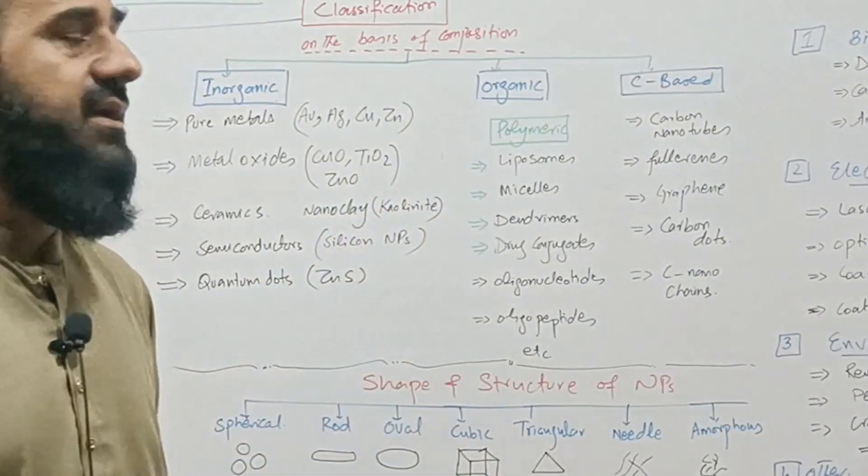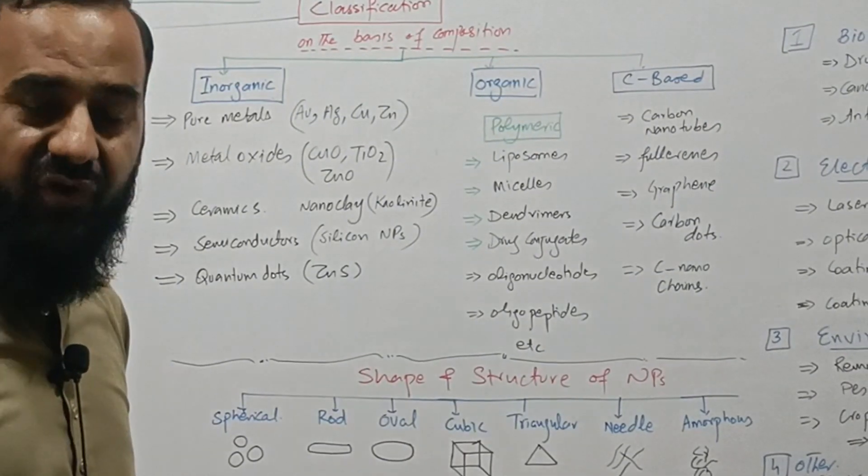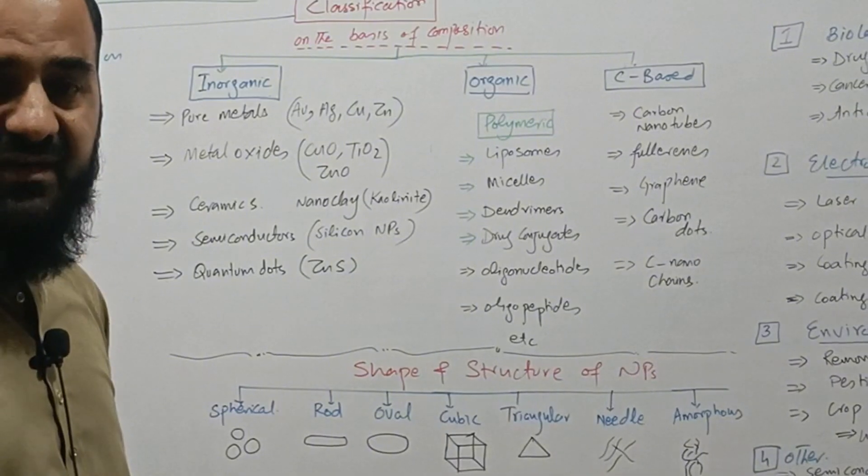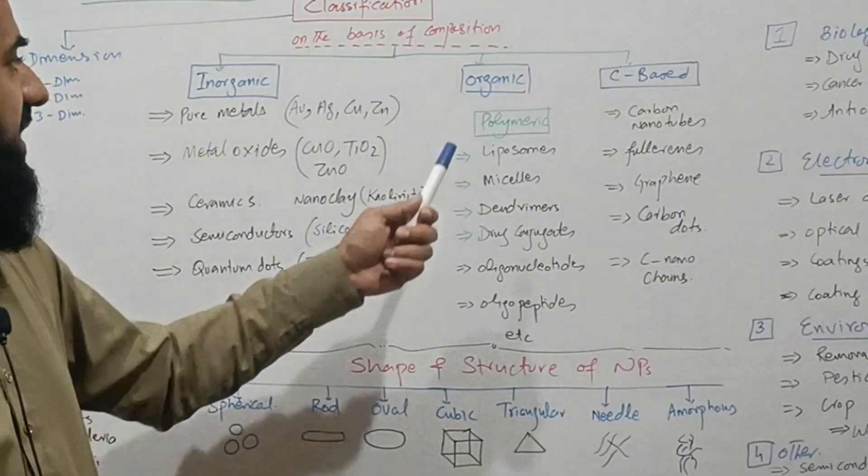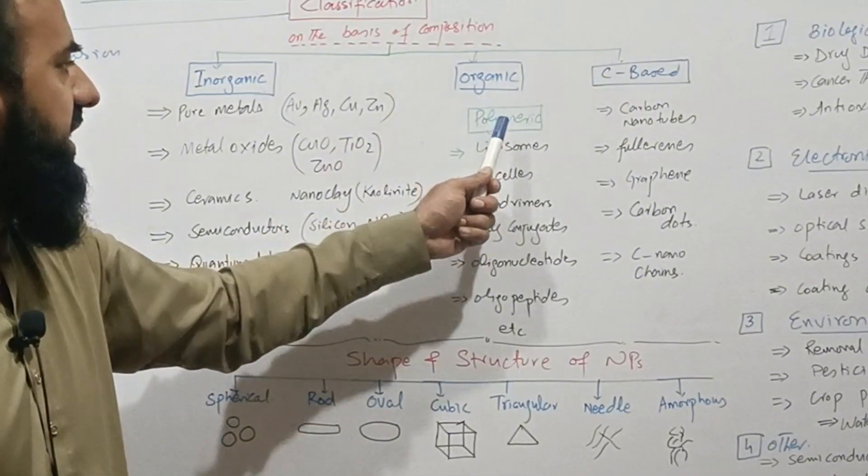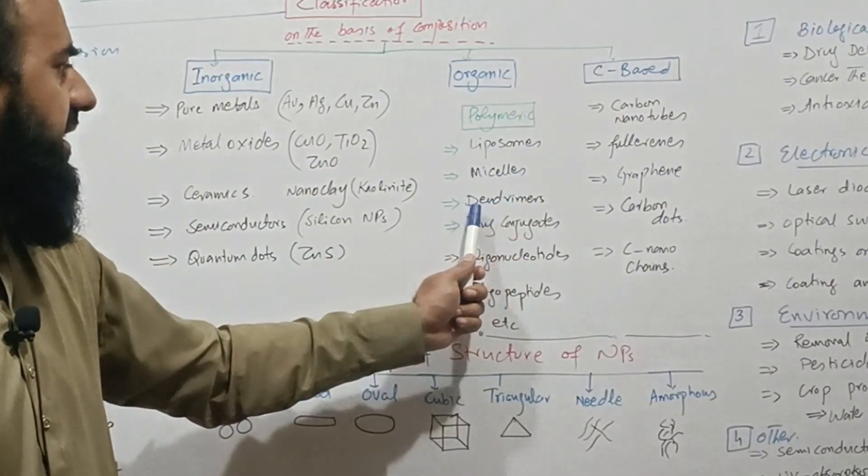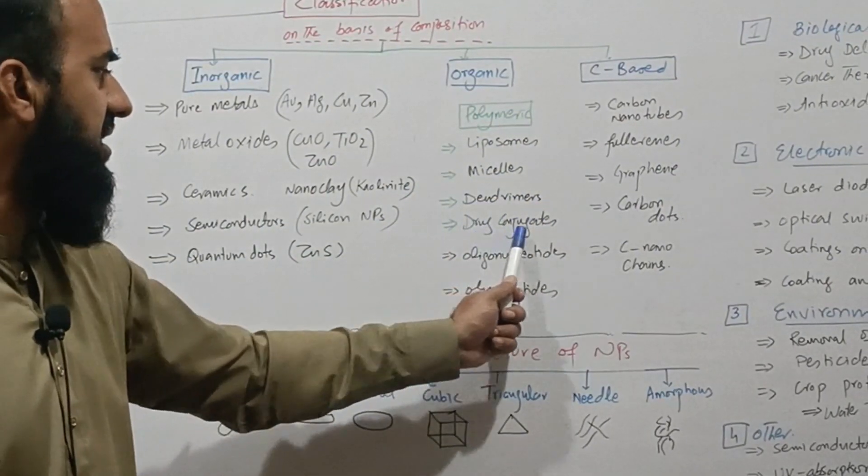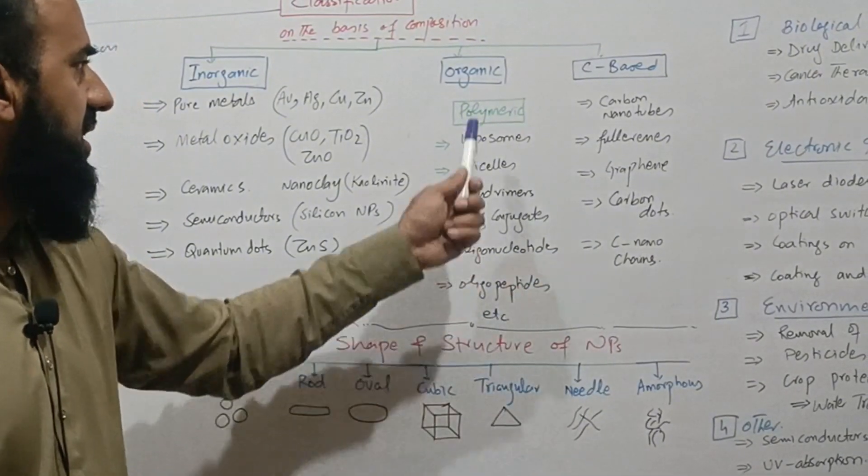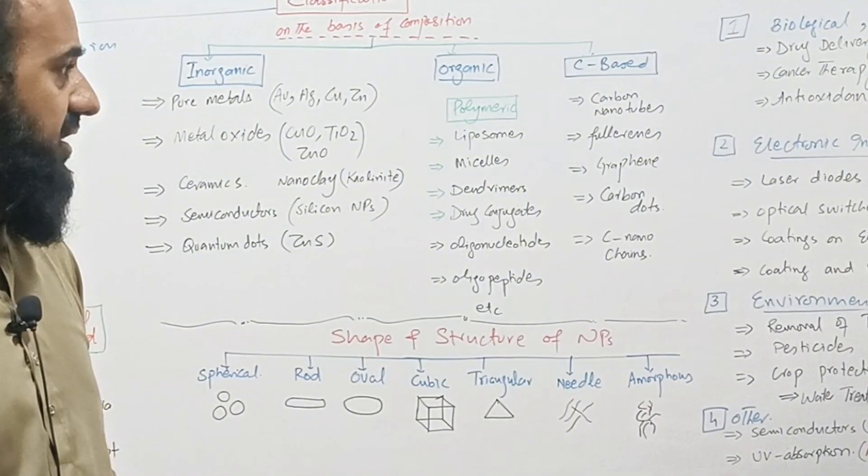There are many organic nanoparticles which are naturally occurring, for example glucose, DNA, protein. A few of the proteins are naturally nanosized. But I am going to discuss a few of the synthetic polymeric organic nanoparticles, for example lipid-based liposomes, micelles, dendrimers, drug conjugates, oligonucleotides and oligopeptides, etc. These are nanoparticles which belong to organic-based nanoparticles.